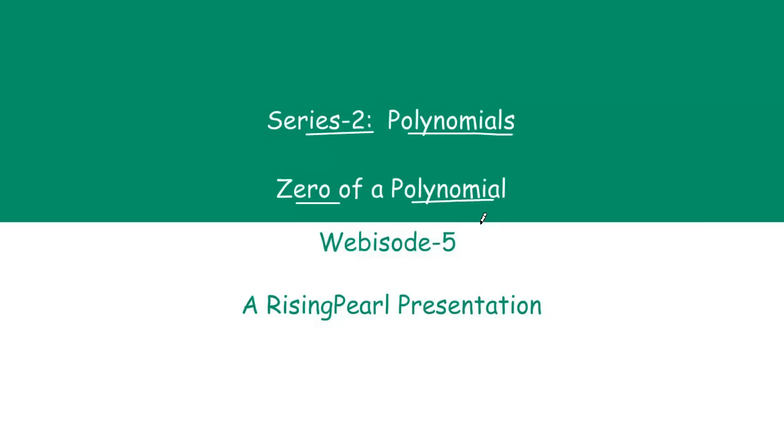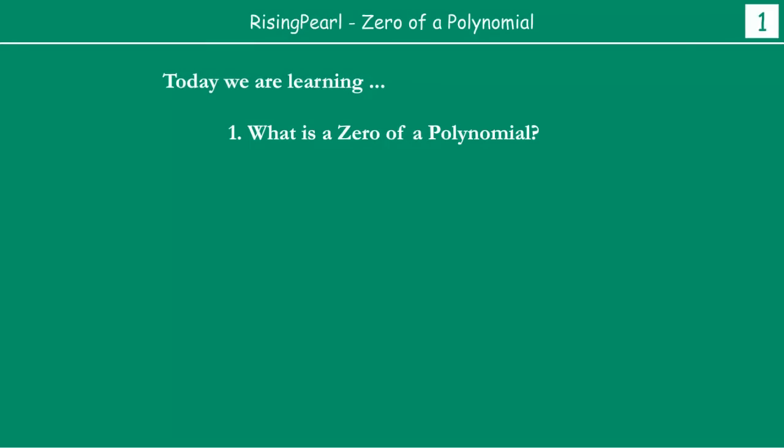Aaj ki topic hai zero of a polynomial. So, hum zero of a polynomial kise kehte hain. What do we mean by zero of a polynomial? And how can we find out the zero of a polynomial? Ye hai aaj ki topic, Dostor.